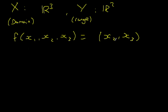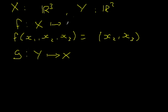And we'll define g going from Y to X, in the opposite direction. f is going to go from X to Y, that goes from three-dimensional space to two-dimensional space, and g goes from two-dimensional space to three-dimensional space. And this is defined by g of x1, x2, is 0, x1, x2.